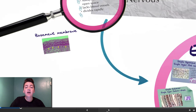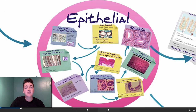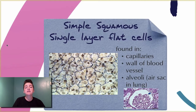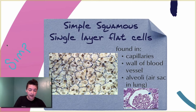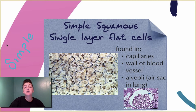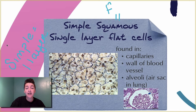There are nine types of epithelial that we're going to take a look at. We have simple and stratified tissues. Simple means one layer. If we look at simple squamous — simple meaning one layer — squamous means flat, so we have a single layer of flat cells.